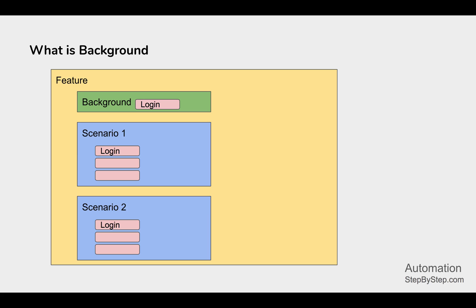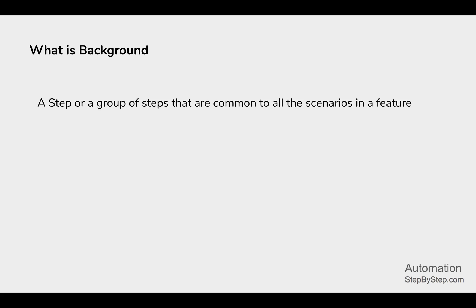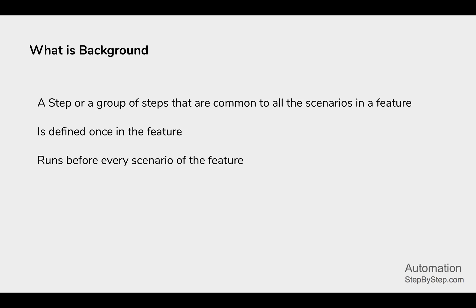In the background section, we put all the login steps: go to the login screen, add username and password, and click on the login button. All these steps go into the background, and then we can remove these login steps from the individual scenarios. So background is a step or a group of steps that are common to all scenarios in a feature. You define it once and it will run before each and every scenario of the feature.